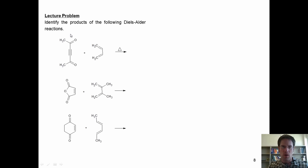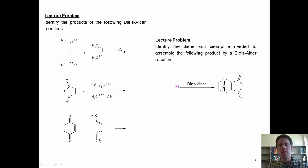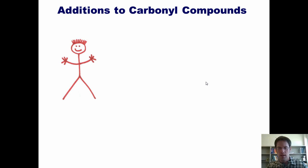Let's get to some problems. First, I want you to identify the products of the following Diels-Alder reactions. Next, I want you to identify the diene and the dienophile that you would need to assemble a given Diels-Alder product.